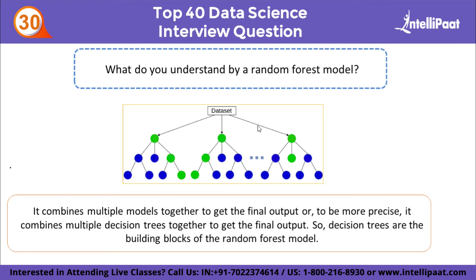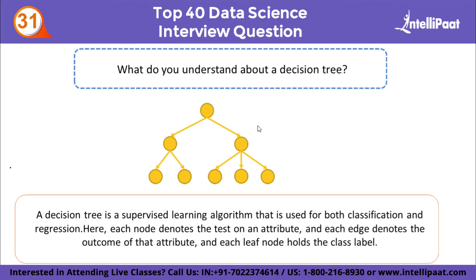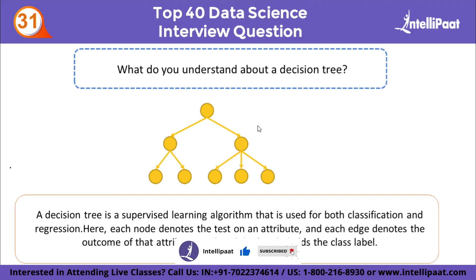What is a random forest model? A random forest model is a combination of multiple decision trees. It combines multiple decision trees together to get the final output. A decision tree is a supervised learning algorithm used for both classification and regression — the same applies to random forest. In a decision tree, each node denotes a test on an attribute, each edge denotes the outcome of that attribute, and each leaf node holds the class label.